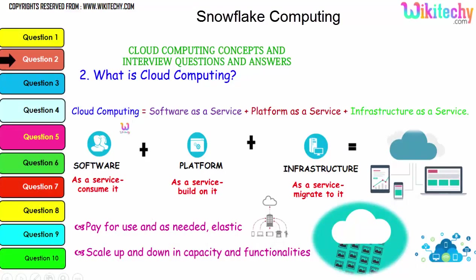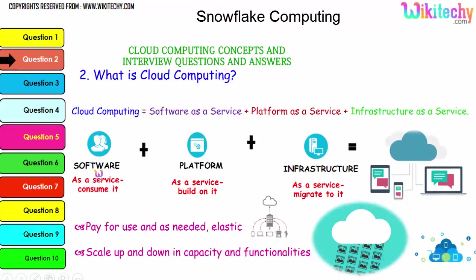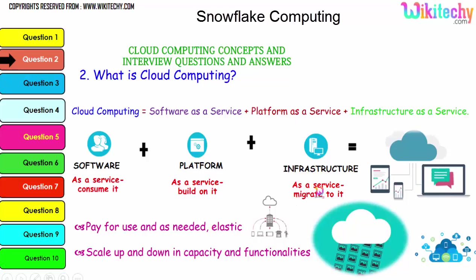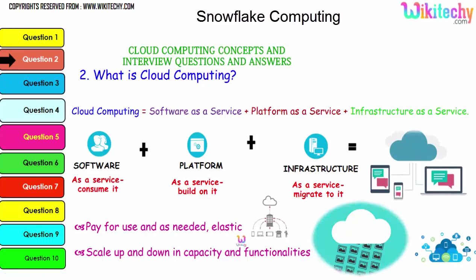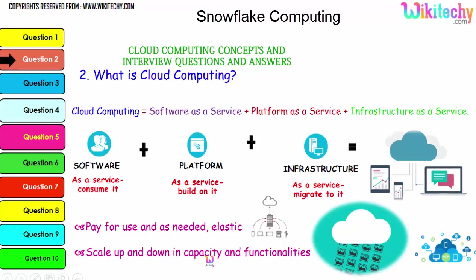Cloud computing is nothing but Software as a Service, Platform as a Service, and Infrastructure as a Service. The collaboration of software, platform, and infrastructure is referred to as cloud computing. The major advantages are: use as needed — pay for minimal storage if that's all you need, or pay for bigger storage if you use more. And elastic — you can extend and reduce, scale up and down capacity and functionalities. These are the major advantages of cloud computing.